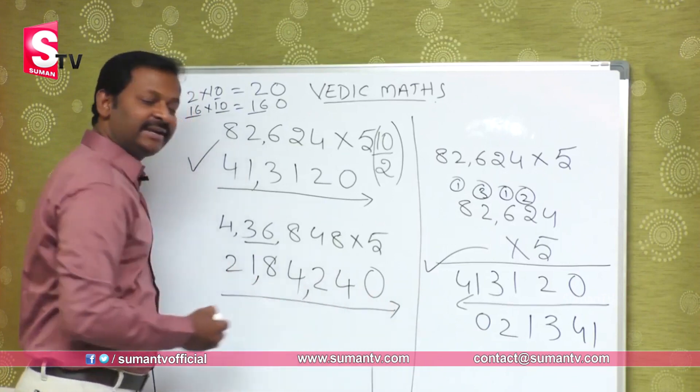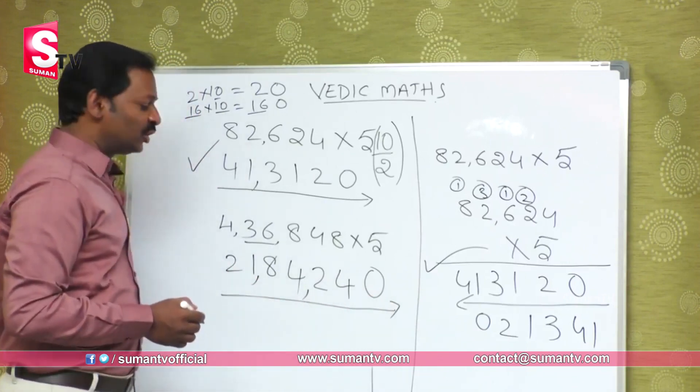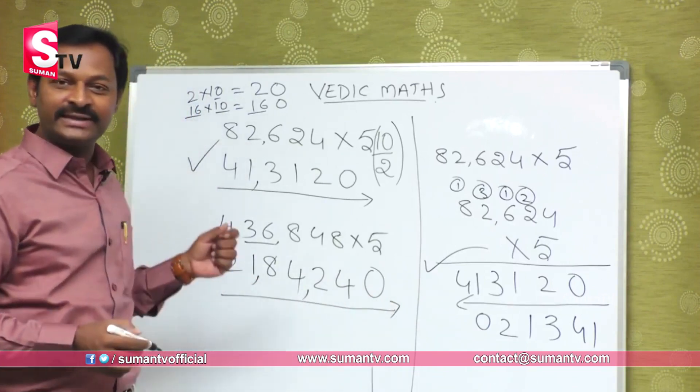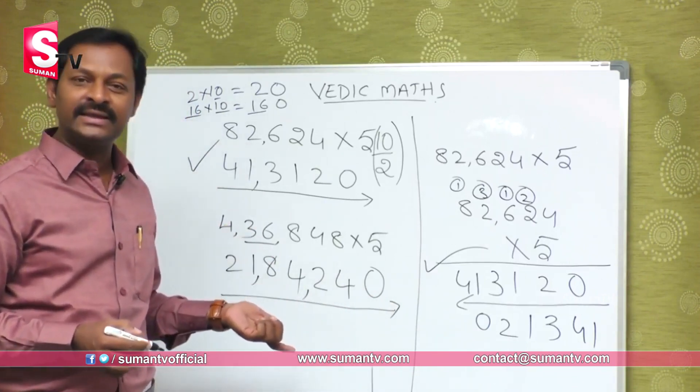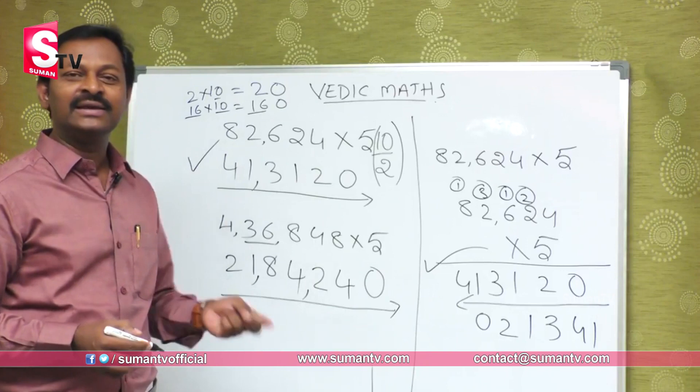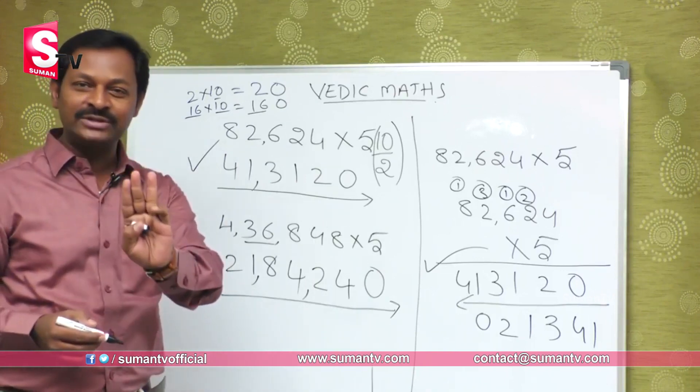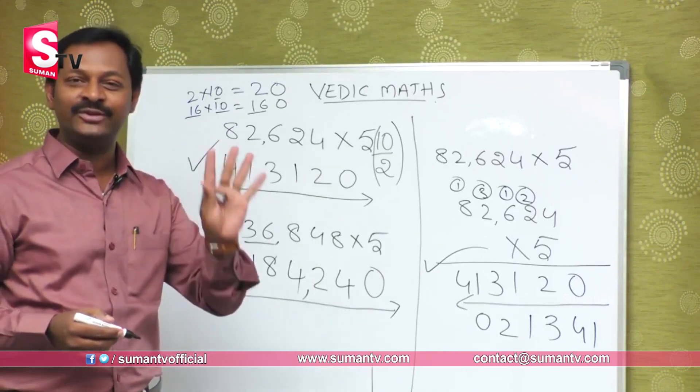The answer to 4,36,848 multiplied by 5 is 21,84,240. You can do this in approximately 3 to 5 seconds using the Vedic method.